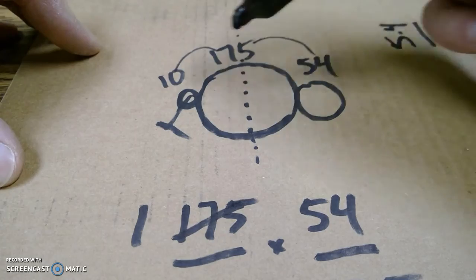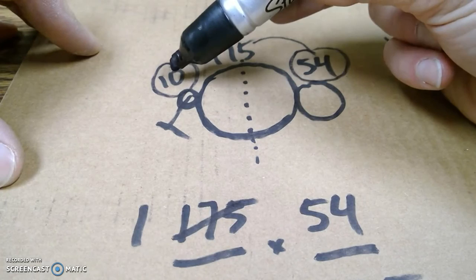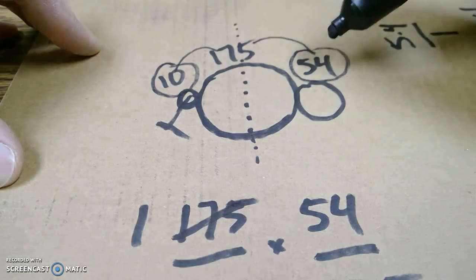Which makes sense, because you need this number to equal this number. So 10 times 5.4 is 54.